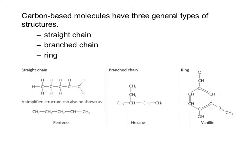Carbon-based molecules have three general types of structures, and you're going to be seeing these a lot as we talk about the different biomolecules. The first type is a straight chain, seen in lipids like fatty acid tails, which are just long hydrocarbon chains. You can also have branched chains — like the carbohydrate on top of a glycoprotein. And we see rings a lot with carbohydrates, which are often rings repeated over and over again.